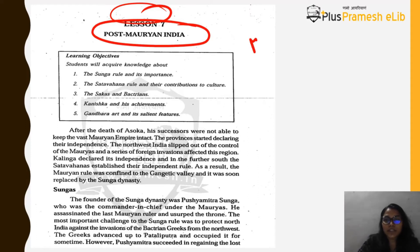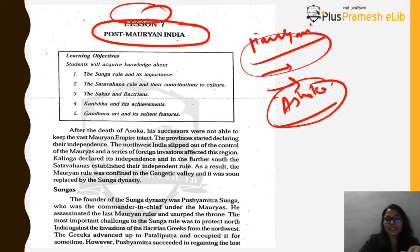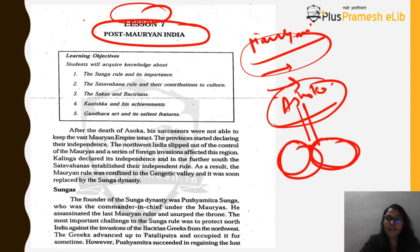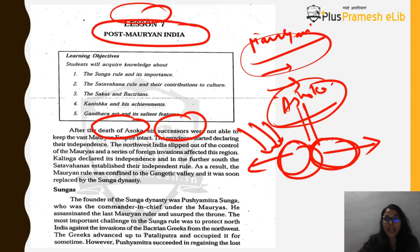The Mauryan dynasty was a very powerful dynasty. Rulers like Chandragupta Maurya, its founder, and Ashoka, who unified India, existed in Mauryan times. However, after Ashoka, the empire was divided into east and west, and foreign invasions began to happen.